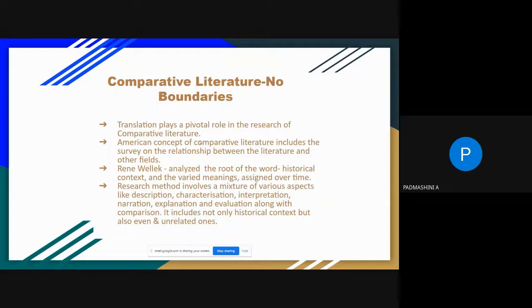The American concept of comparative literature includes the survey on the relationship between literature and other fields of study. René Wellek is the most important American comparatist. He analyzed the root of the word, the historical context of the word, and its varied meanings which had been assigned over time.